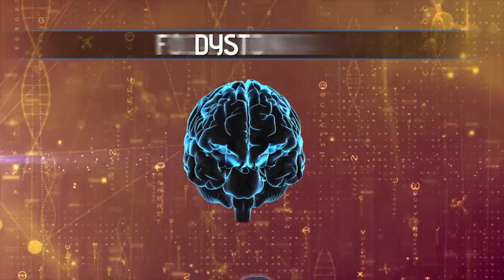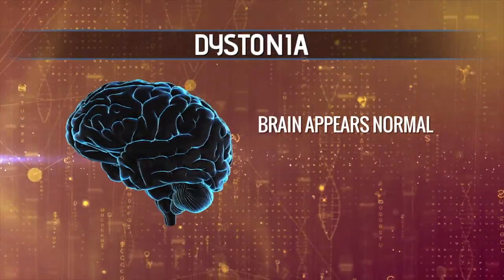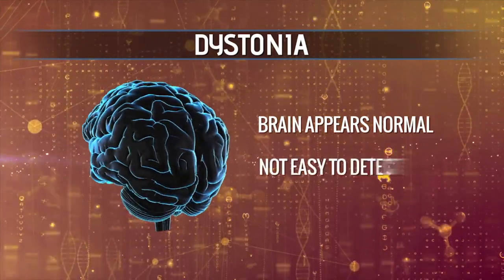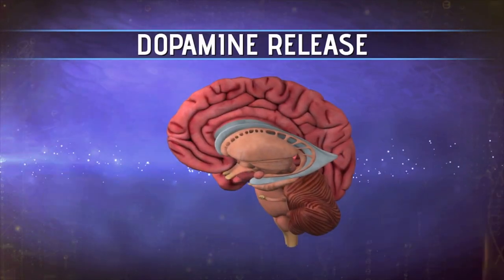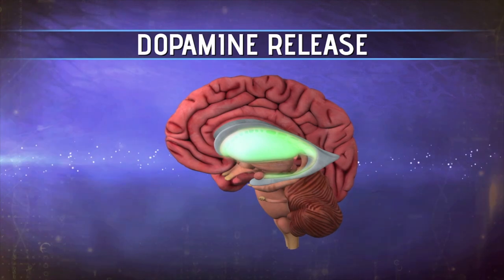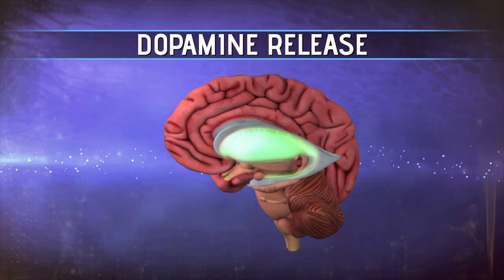In dystonia, if you look at the brain, at least superficially, it looks normal. So it's not easy to say there is the problem. We can see that there are abnormalities in the basal ganglia — these are the deep nuclei in the brain. We have evidence that there is an abnormality of dopamine release in the basal ganglia with movement. There are abnormalities also in other neurotransmitter systems, such as GABA, which is an inhibitory neurotransmitter. So we are beginning to identify problems.